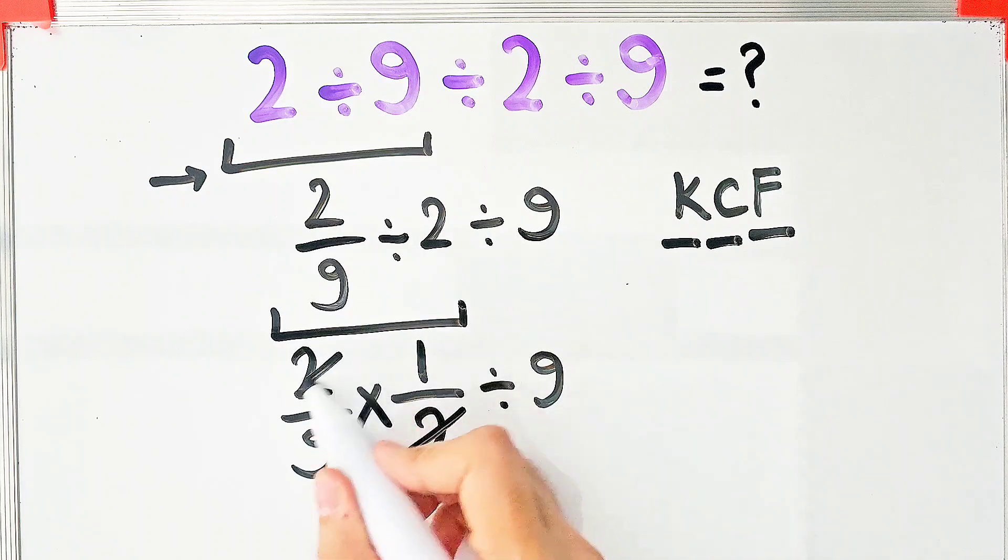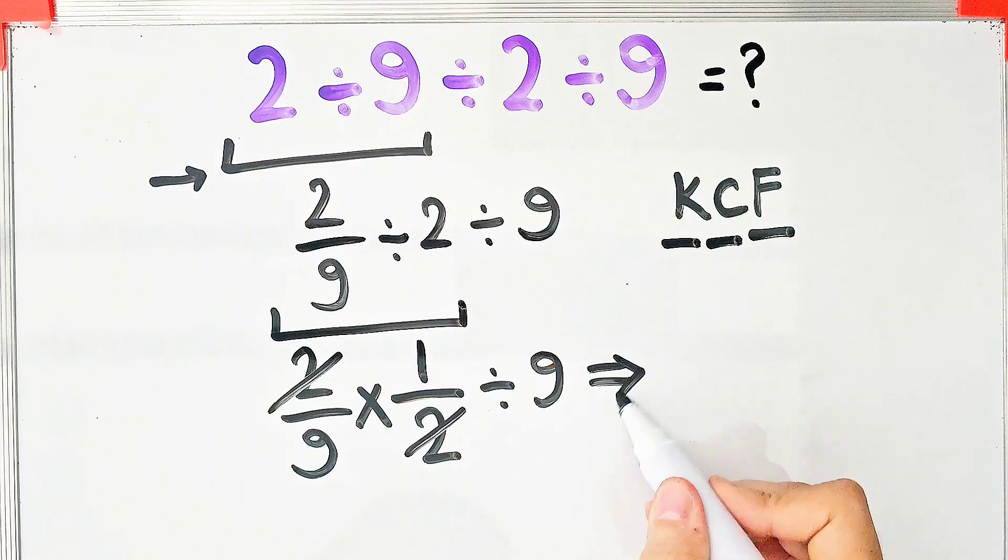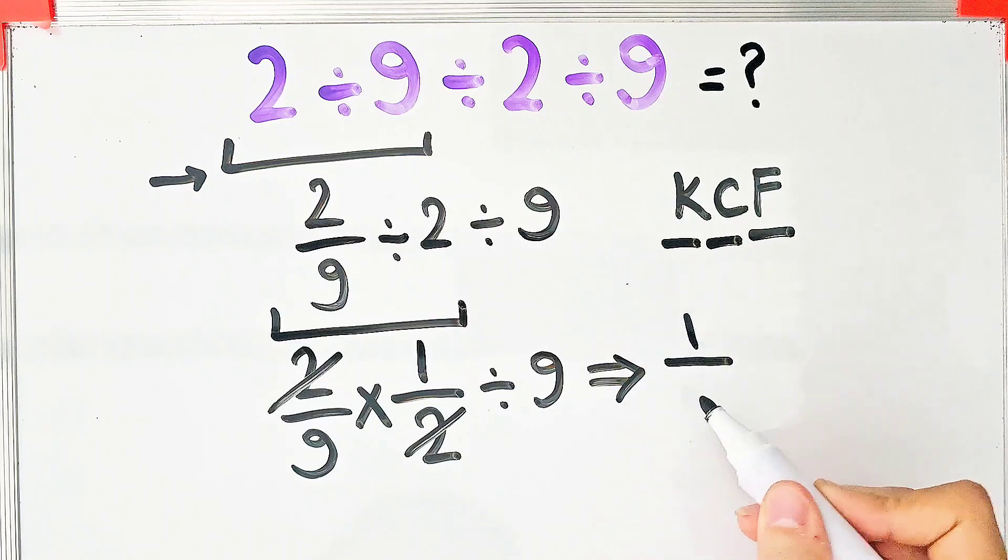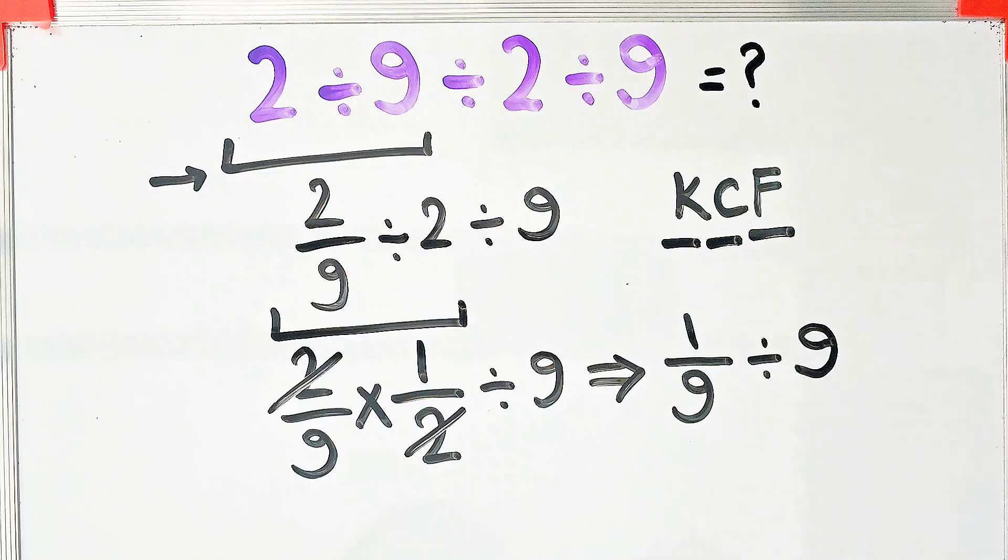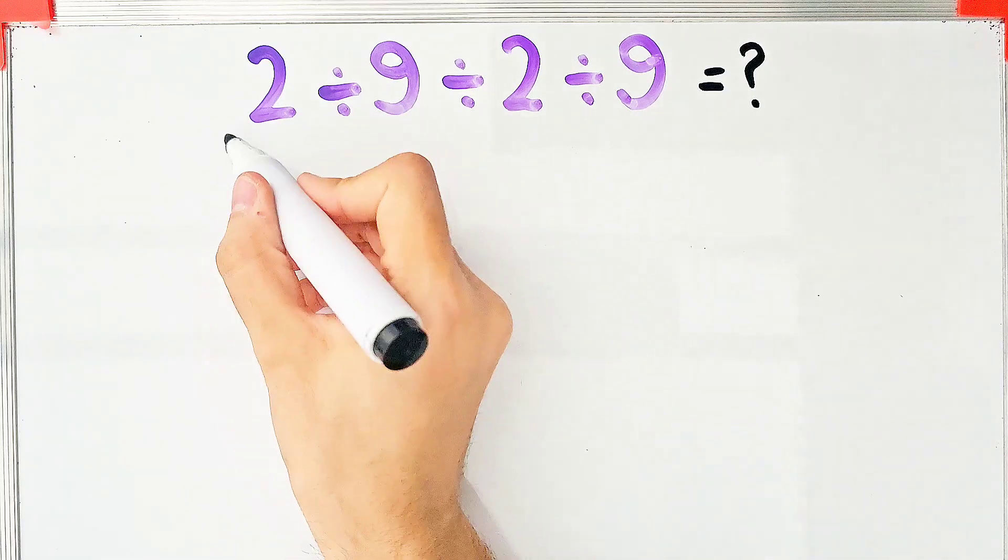We simplify the question and now we have 1 over 9 divided by 9. As you can see in the image, we have a fraction divided by a number.